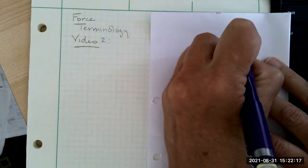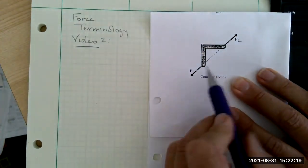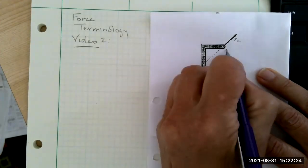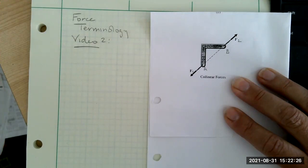We call this F1 and F2. And we noticed that F1 is acting at this point, let's call it point A. And F2 is acting at point B, and they're acting along the same line.